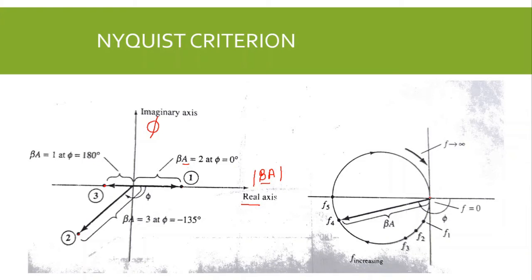At the origin, the loop gain equals zero and frequency also equals zero. Because of the RC coupling, as frequency increases the phase shift also increases and the magnitude of the loop gain also increases — you can see this at points f1, f2, f3. At frequency f4, the magnitude of the loop gain is this vector and the phase shift is phi. At f5, the phase shift is 180 degrees. At higher frequency, the loop gain decreases again, and as frequency approaches infinity the loop gain approaches zero.